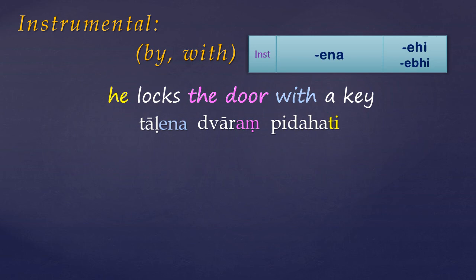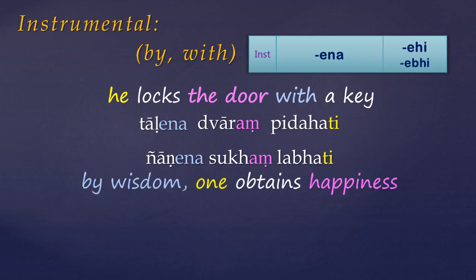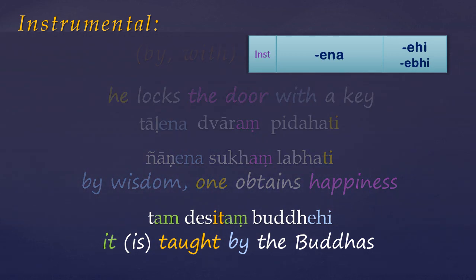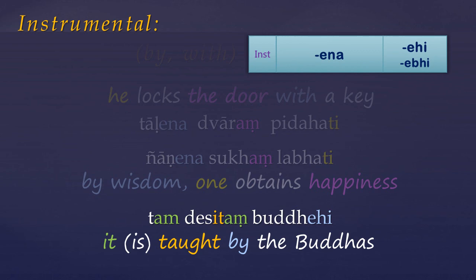Looking at a couple more examples of the instrumental: 'by wisdom one obtains happiness', which could equally be rendered 'through wisdom one obtains happiness'. And 'it is taught by the Buddhas'. You might notice here that 'desetang' isn't a normal verb — in fact it's a past participle. Warder gives us a long list of participle stems, and I want to dig into how these are formed. But remember those instrumental case endings, as we'll be seeing those later.